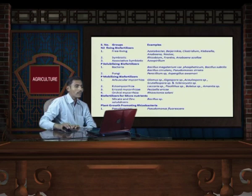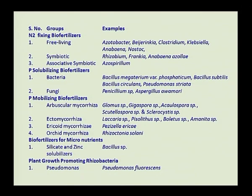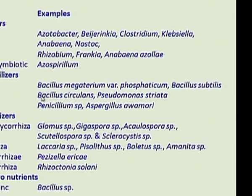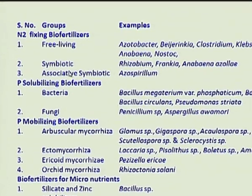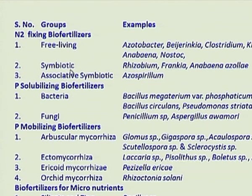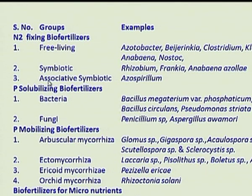Different examples of bio-fertilizers: free-living nitrogen-fixing bio-fertilizers include Azotobacter, Beijerinckia, Clostridium, Salvecilla, Anabaena, and Nostoc. Symbiotic nitrogen-fixing bio-fertilizers include Rhizobium, Frankia, Anabaena, and Azolla. Associative symbiotic nitrogen fertilizers include Azospirillum.